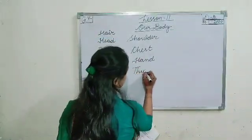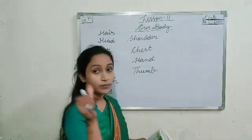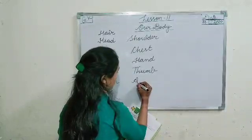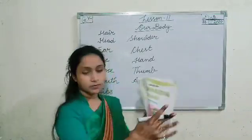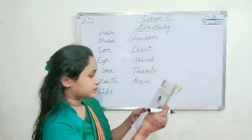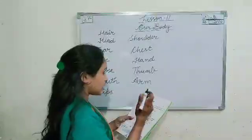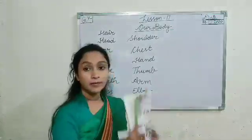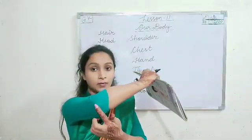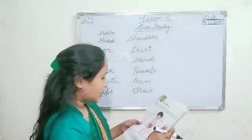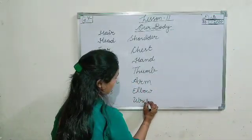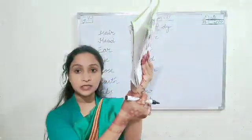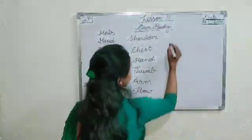Thumb — T-H-U-M-B — thumb. After that, arm. After that, elbow. Where is elbow? Do you remember? It is our elbow. After that, wrist — W-R-I-S-T — wrist. 'Kalai' — it is wrist.